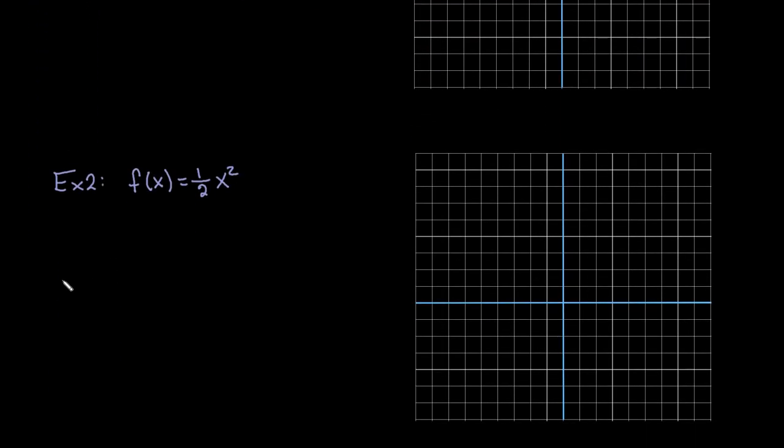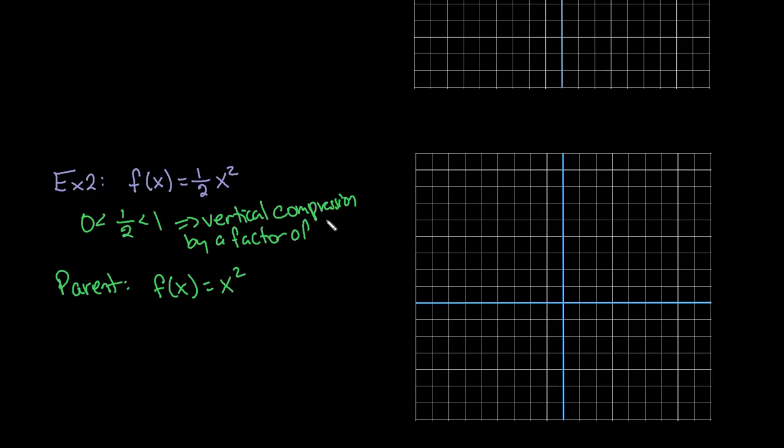Same thing for this one. My parent function for this equation is still going to be f(x) = x². This time, 1/2 is between 0 and 1. So this one is going to be a vertical compression by a factor of 1/2. So it's going to go up half as fast as the original one.